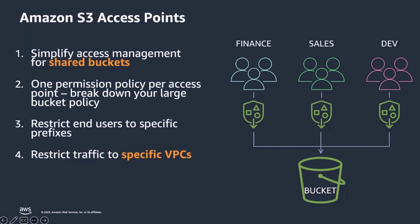With S3 access points, you can create individual access control policies for each access point to easily control access to shared datasets and reduce the blast radius of mistakes. You can scale access for hundreds or even thousands of applications by creating individualized access points with permissions customized for each application. Bucket owners can also leverage cross-account S3 access points to delegate access management to trusted AWS accounts, granting data access to cross-account users without managing IAM roles or multiple access point policies.